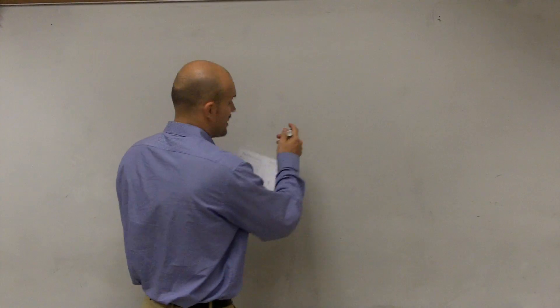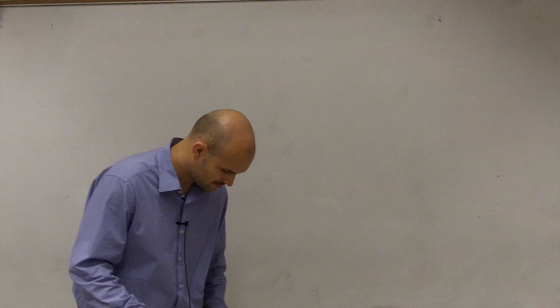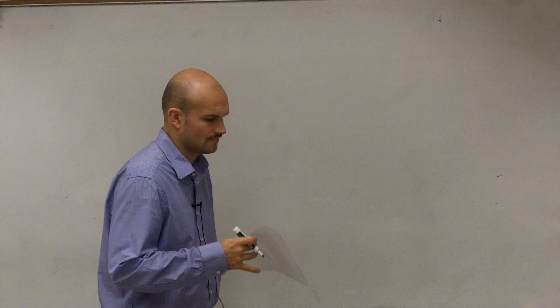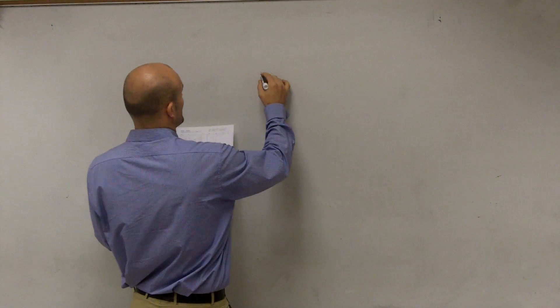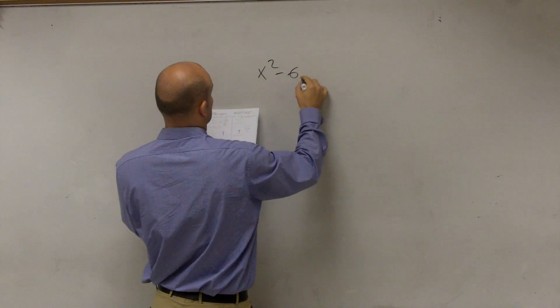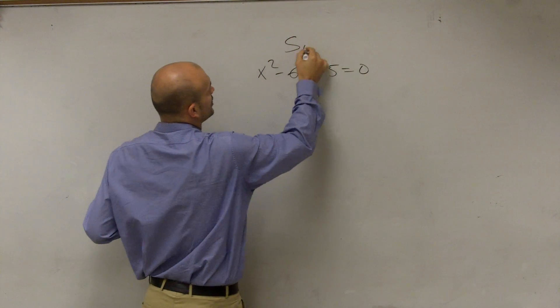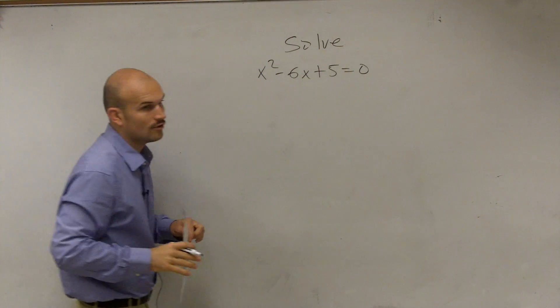So on the first one, we have x squared minus 6x plus 5 equals 0. And the key words I said were solve.